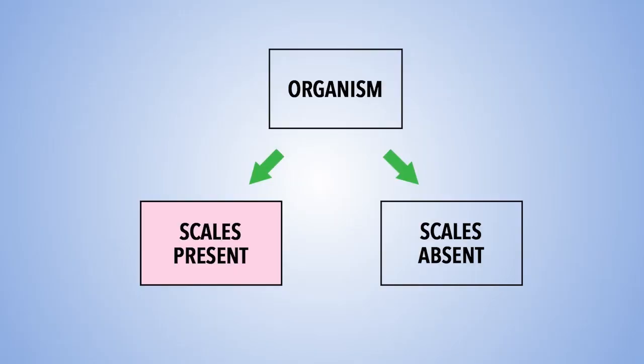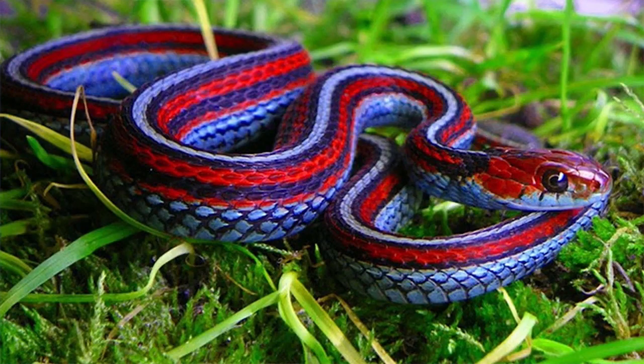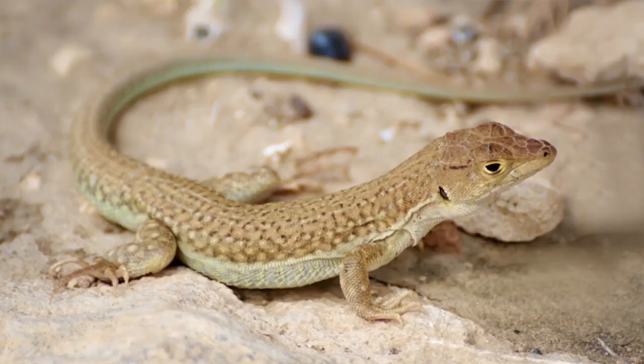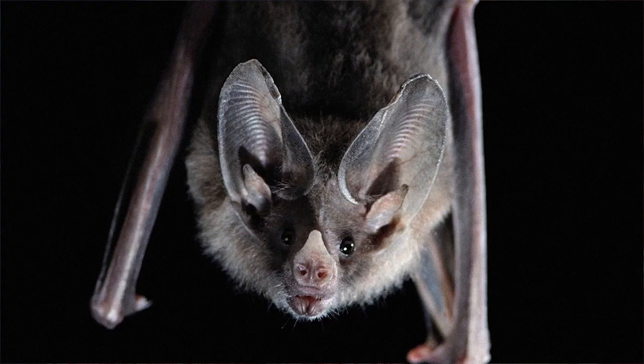First, they are all organisms. Secondly, all the organisms are vertebrates. However, we can put them into two groups: scales present and scales absent. For scales present, we have the snake, fish, and lizard. For scales absent, we have the lion, ostrich, bat, and domestic fowl.